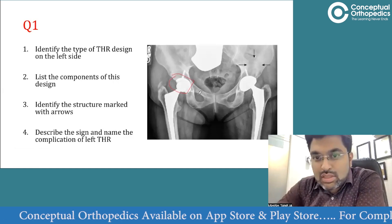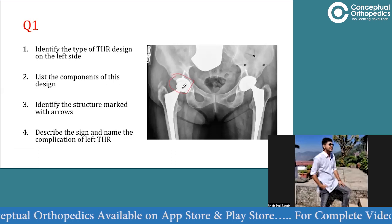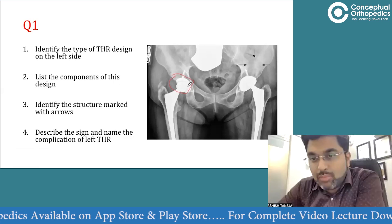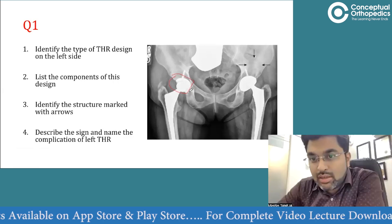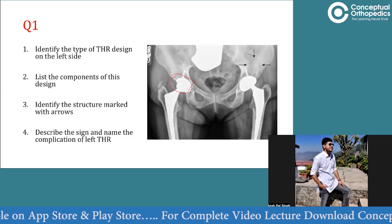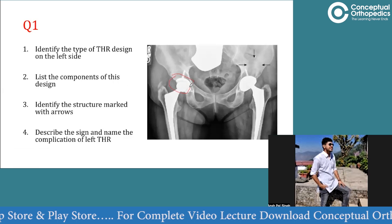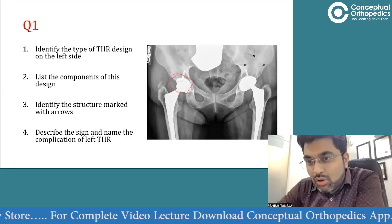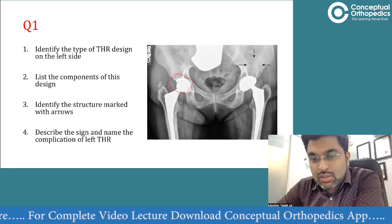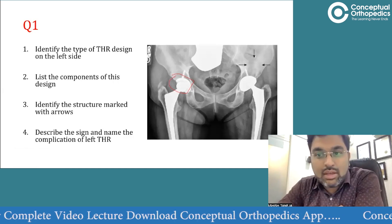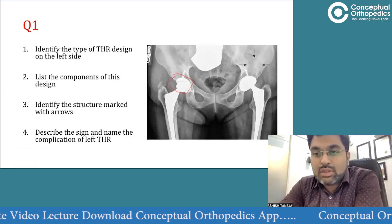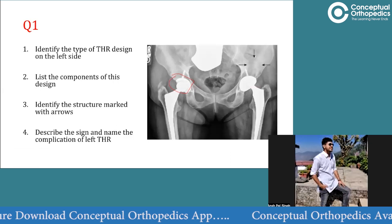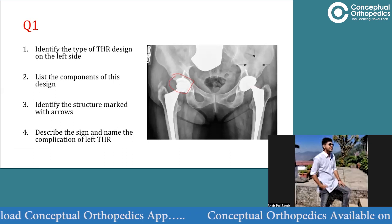On the right side this is a standard THR - if we have a poly liner it is translucent. But in this case it is all opaque, so it's a metal liner. Does that give you any hint which kind of design we're talking about? It's a dual mobility design with a metal liner.